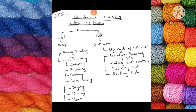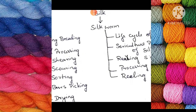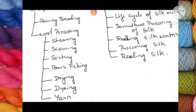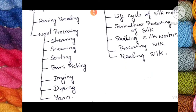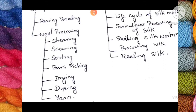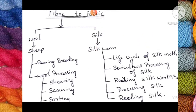We are getting wool from sheep. All the processes involved are rearing, breeding, and wool processing. In wool processing we have several other steps: shearing, scouring, sorting, removing burrs, picking, drying, dyeing, and yarn. Whereas from silkworm we are getting silk.